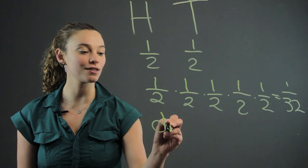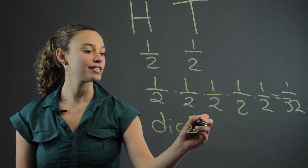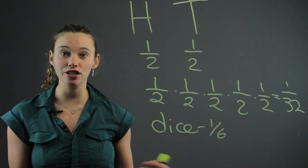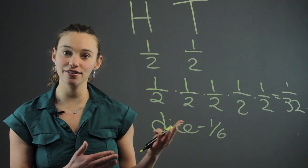We often like to do things with dice as well, which is where it's like one out of six. For example, the probability that I'll roll a two on the dice is one out of six.